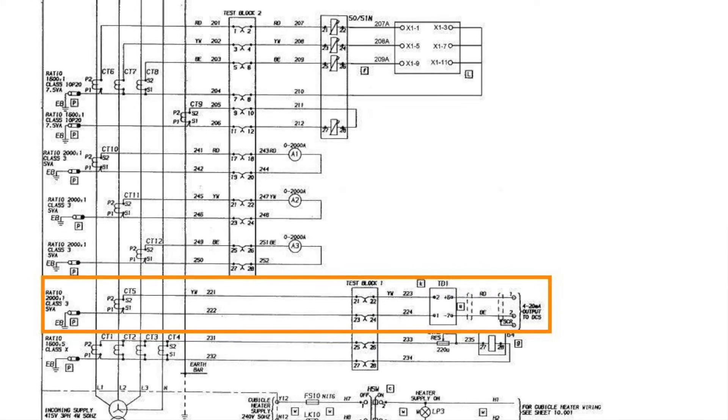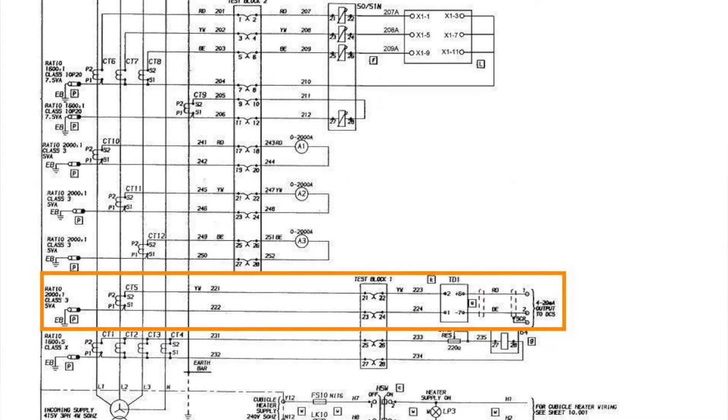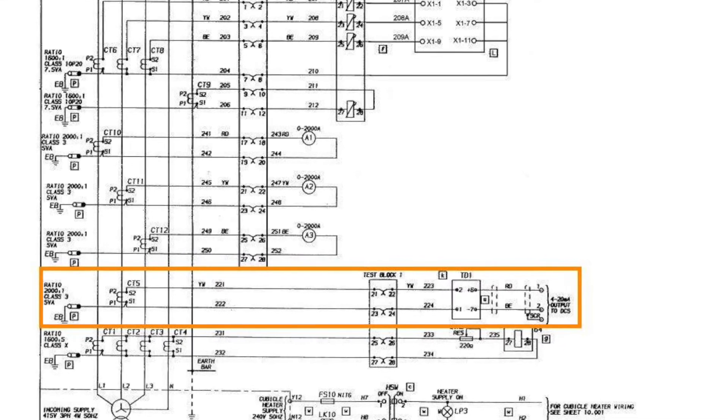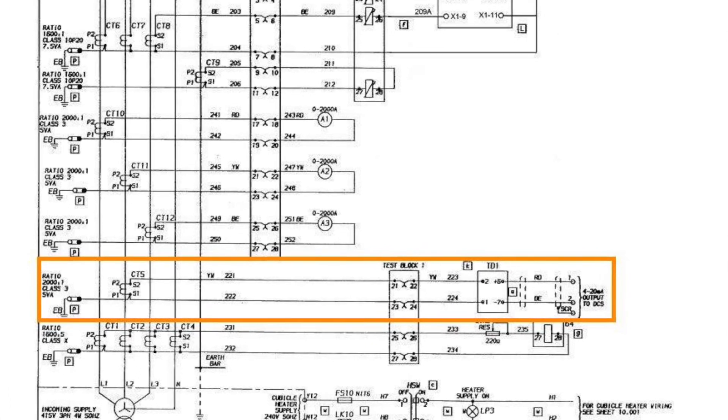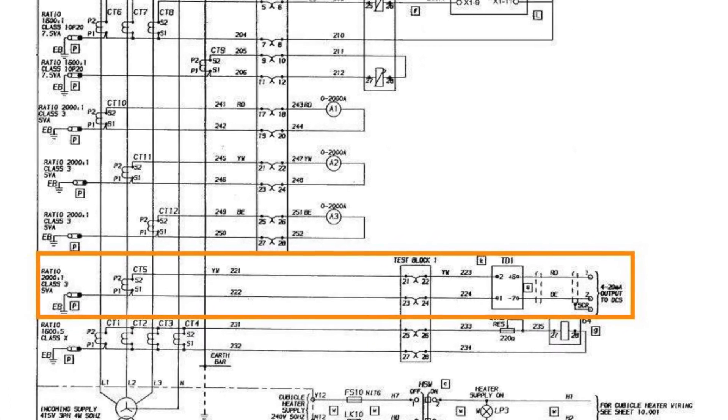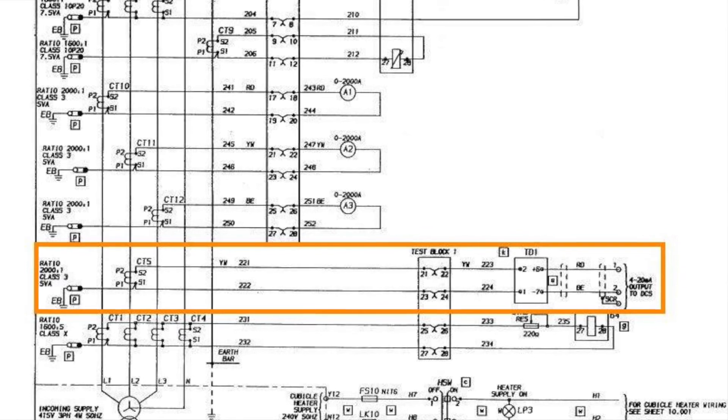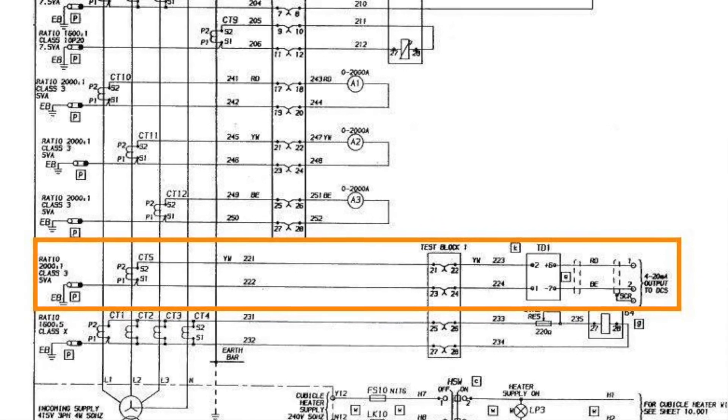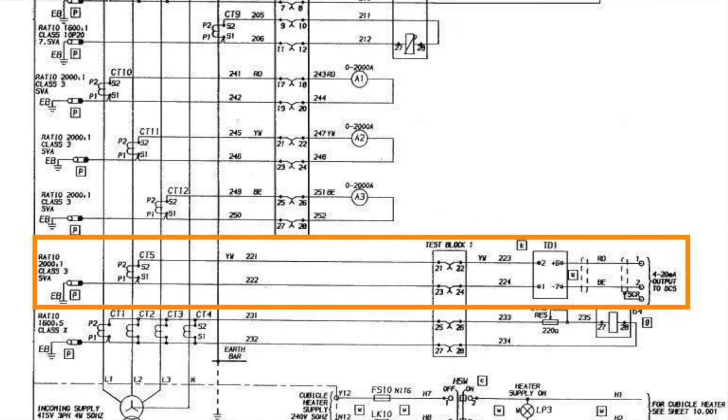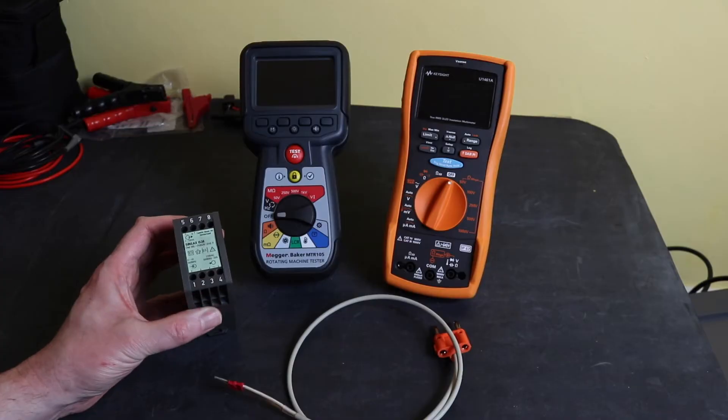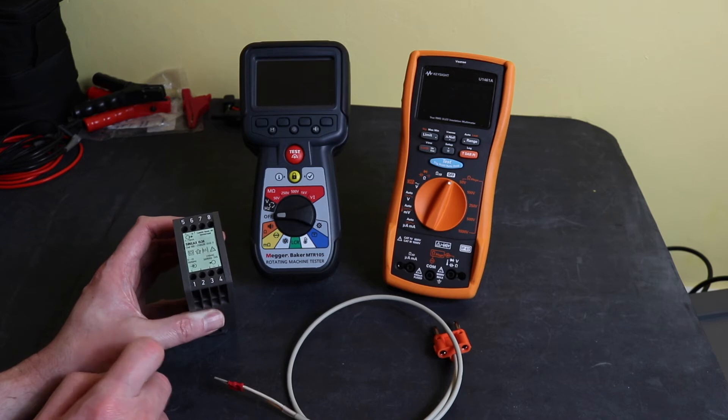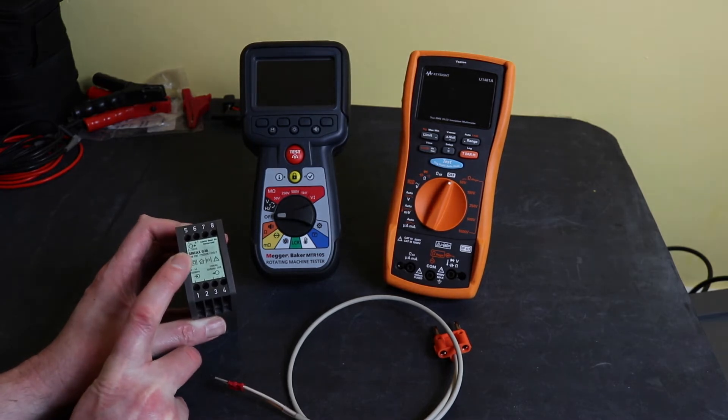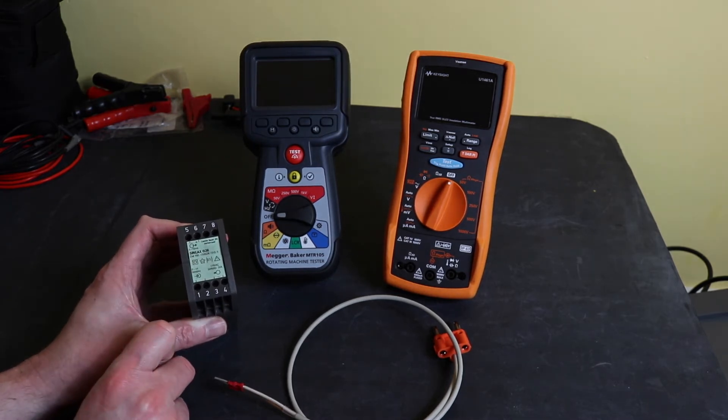You'll see on the far left hand side there is a single current transformer called CT5 that has a 2000 to 1 amp ratio that feeds through. It feeds via the test block straight into the current transducer such as this one here. That would be the 0 to 1 amps that would come in on terminals 1 and 2 here. And then on the output would go 4 to 20 milliamp out to the control system.